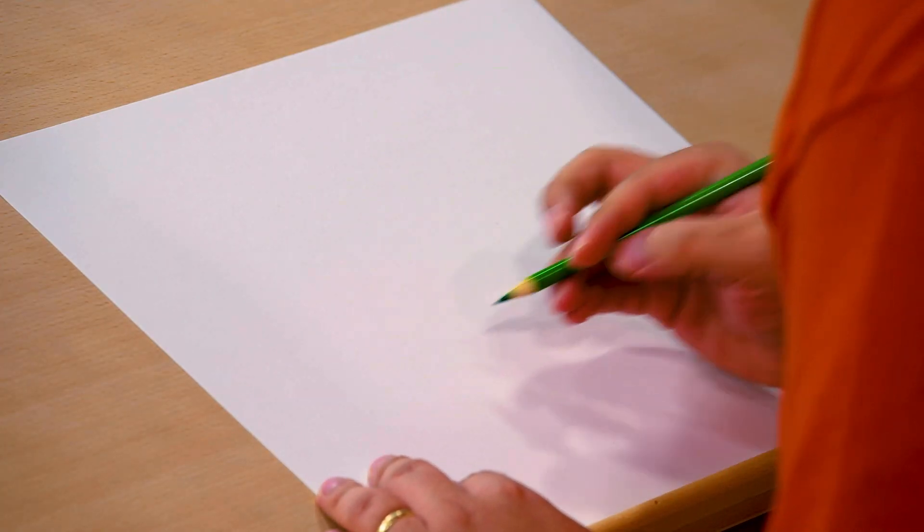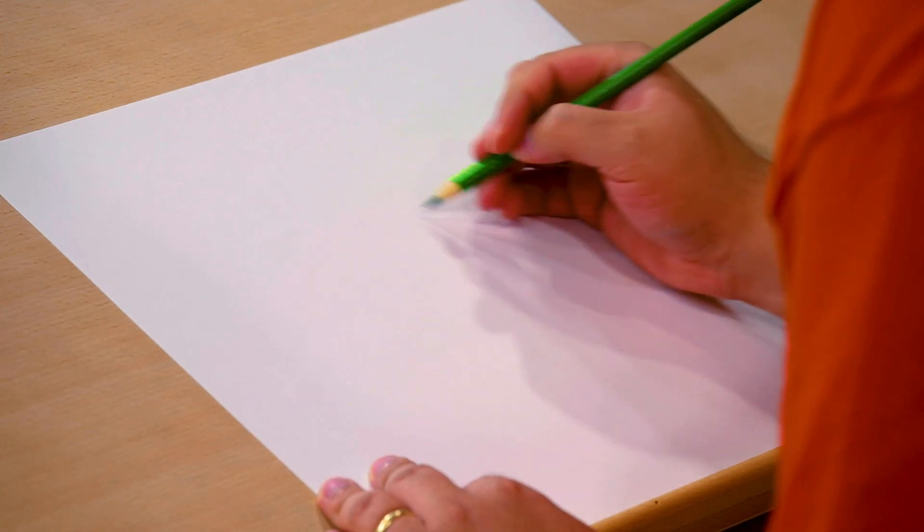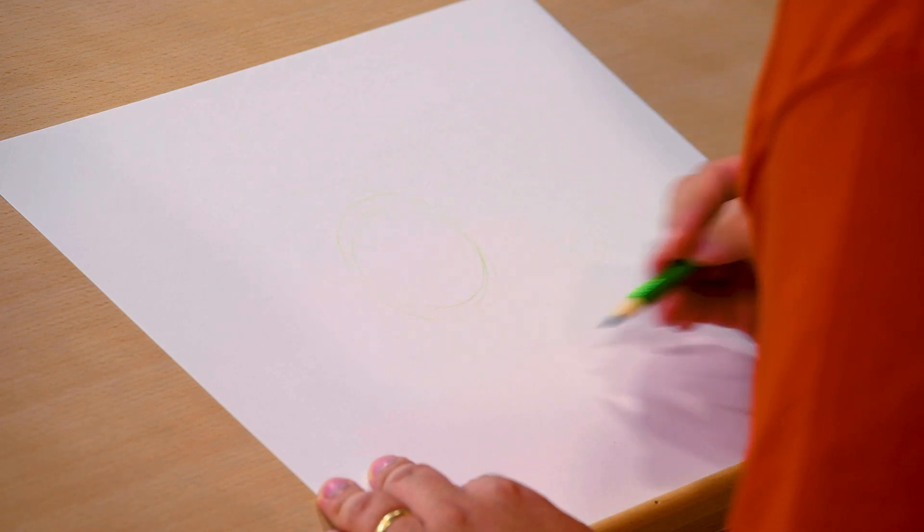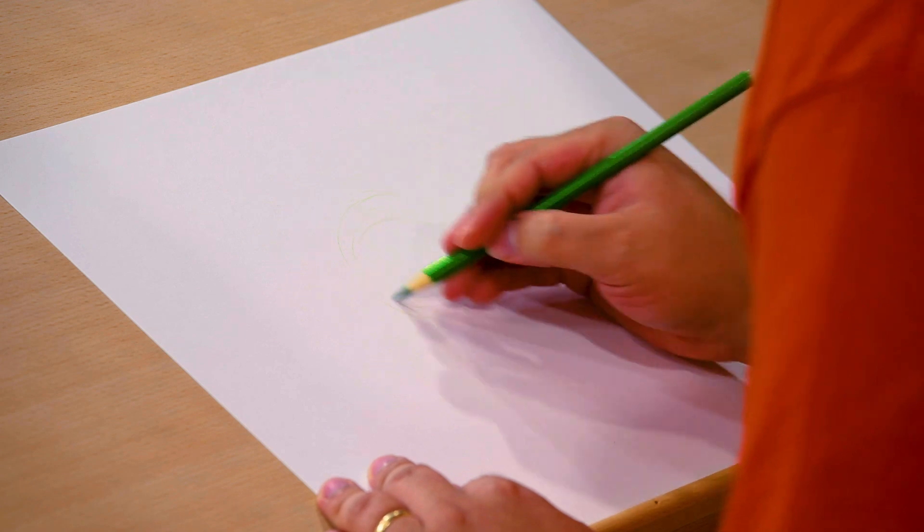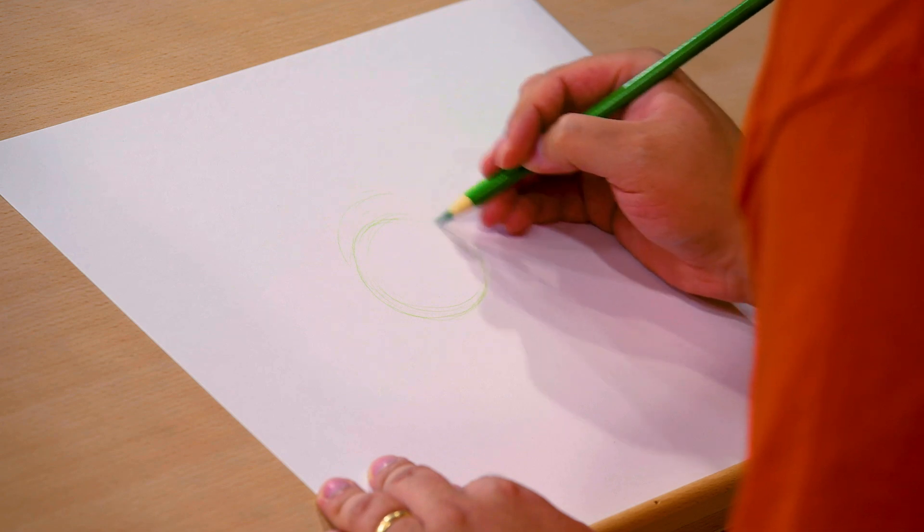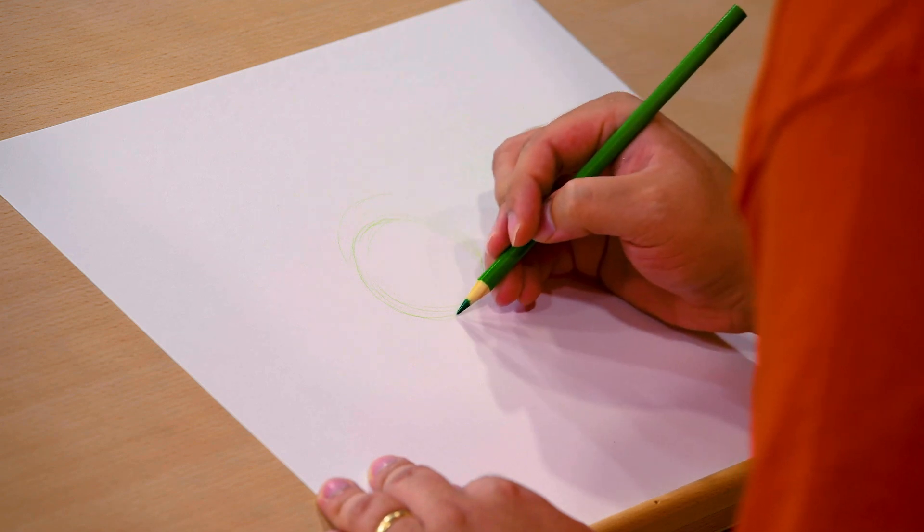All right, so the first thing we're going to do is start with a circle. That's how we start with most of our characters. That might be a little bit big. Again, that's another good reason to draw light. And this circle just squished down just a little bit. It's a slight oval for Widget.